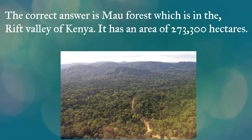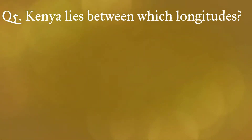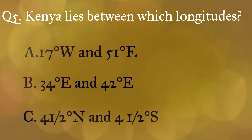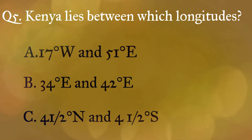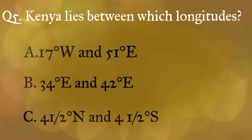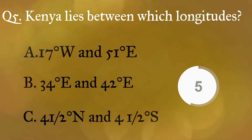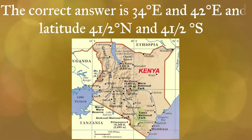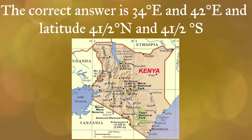Question 5: Kenya lies between which longitudes? A: 17 degrees west and 51 degrees east, B: 34 degrees east and 42 degrees east, C: 4.5 degrees north and 4.5 degrees south. The correct answer is 34 degrees east and 42 degrees east. However, it is on latitude 4.5 degrees north and 4.5 degrees south.